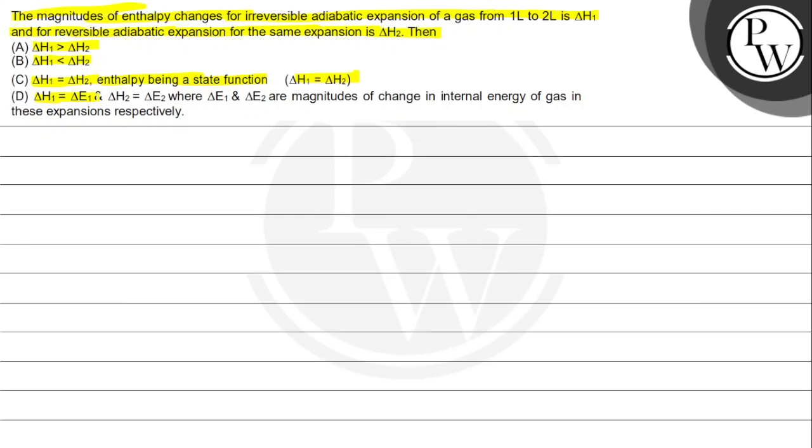Option D: ΔH₁ is equal to ΔE₁, and ΔH₂ is equal to ΔE₂, where ΔE₁ and ΔE₂ are magnitudes of change in internal energy of the gas in these expansions respectively.